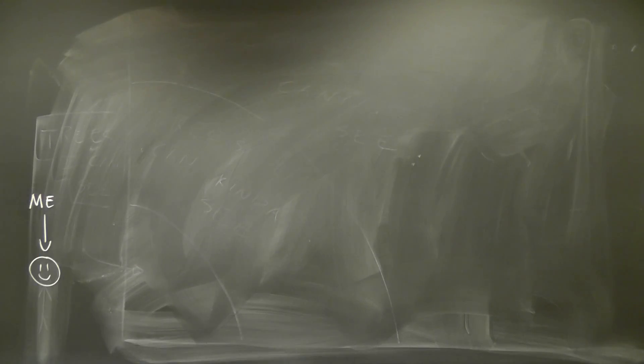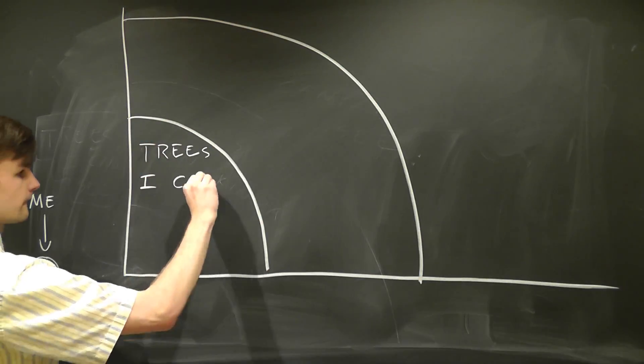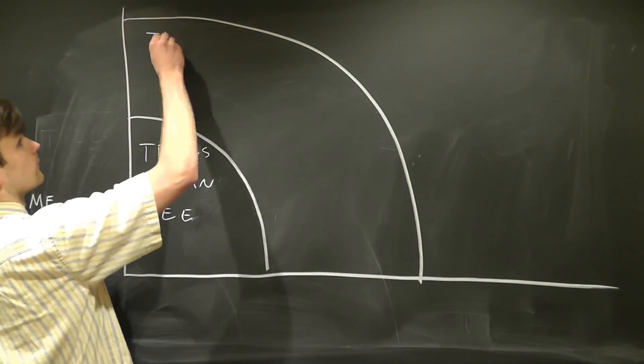This is amazing, but what happens if we make the orchard larger? See, I somewhat naively thought that the trees that are further out in the distance would be harder to see, because they would be blocked by the ones that were closer to us.